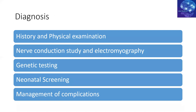Diagnosis is made through history and examination — in neurology, history is paramount, followed by examination. Nerve conduction study and electromyography can then be performed. Compound motor action potential assessment gives an idea of disease severity. For patients with SMA2 and SMA3 having SMN2 copy numbers of three and less, reduced compound muscle action potential can indicate disease severity and staging.